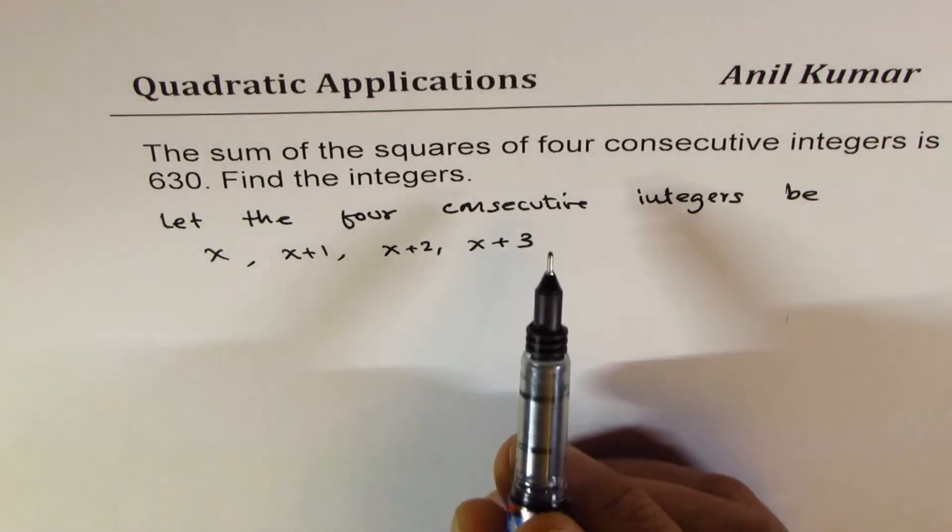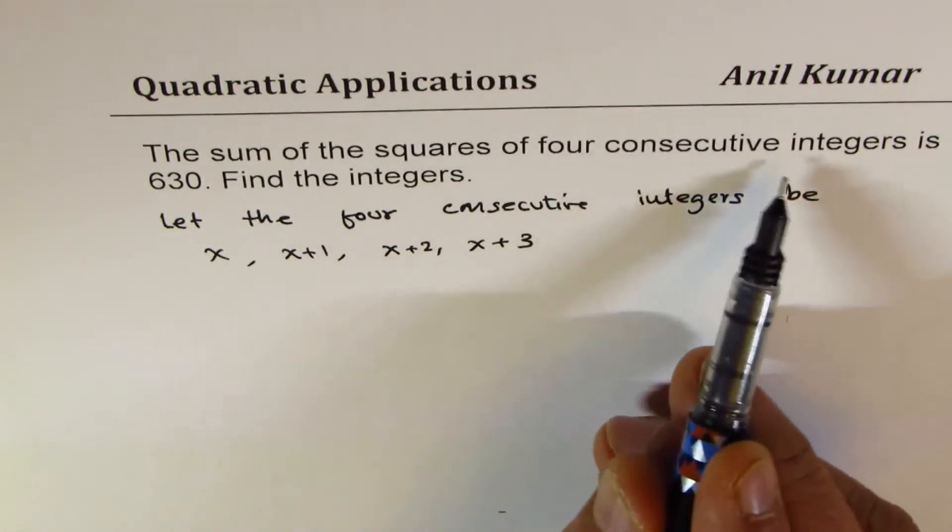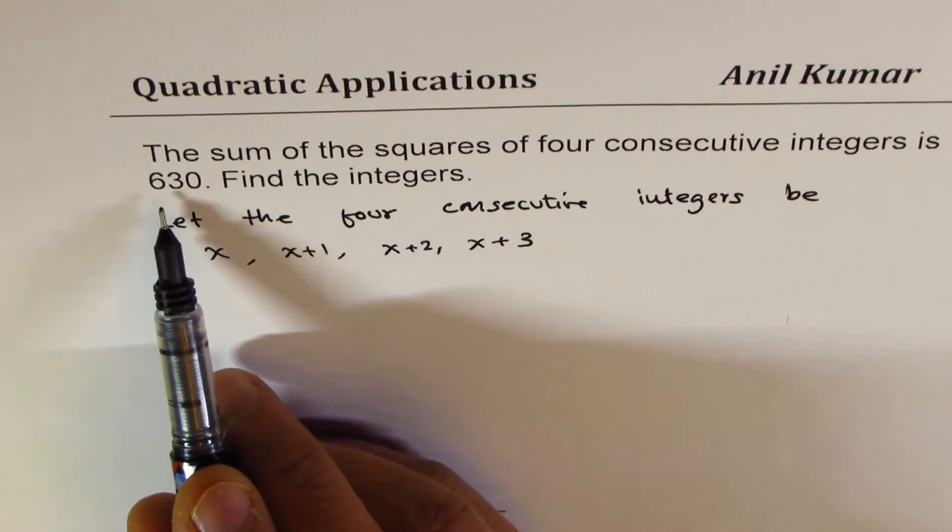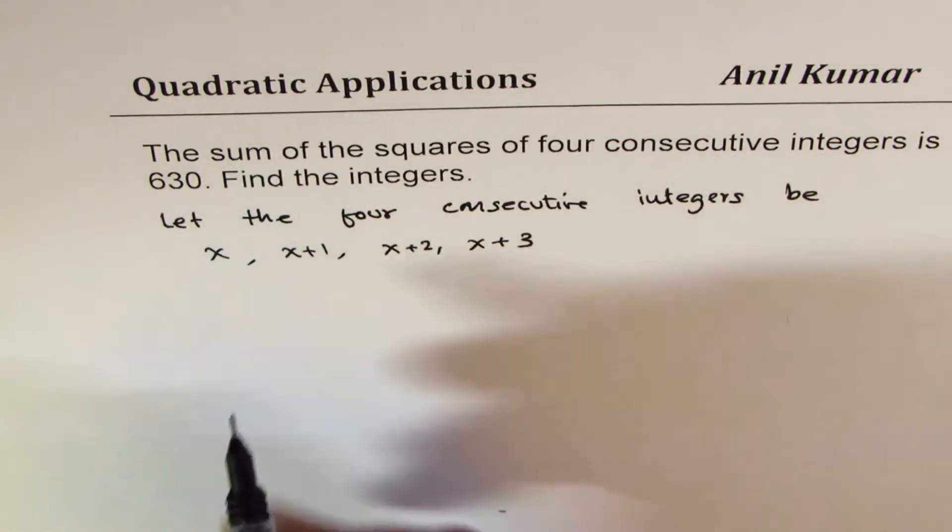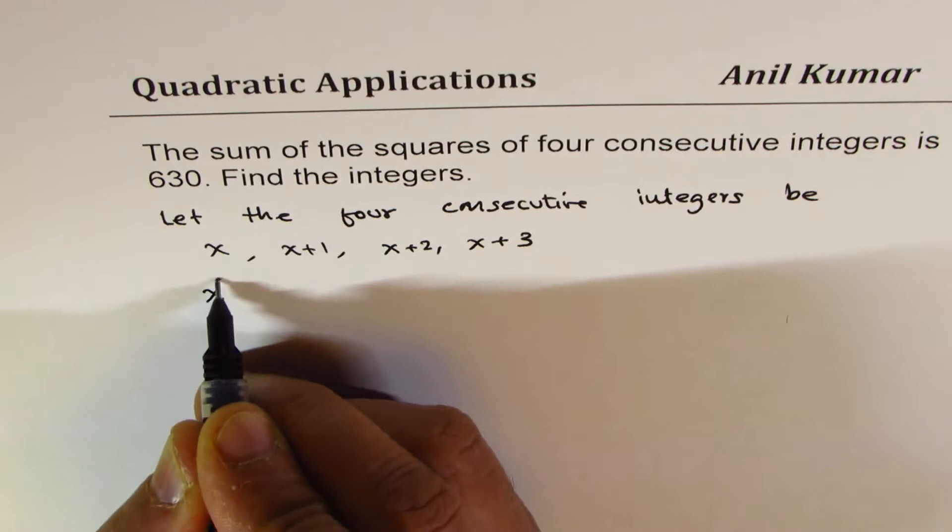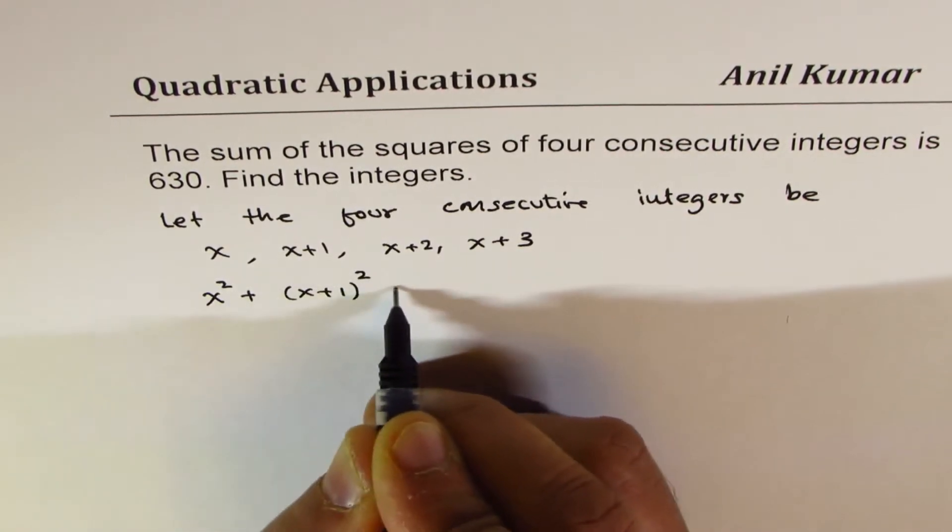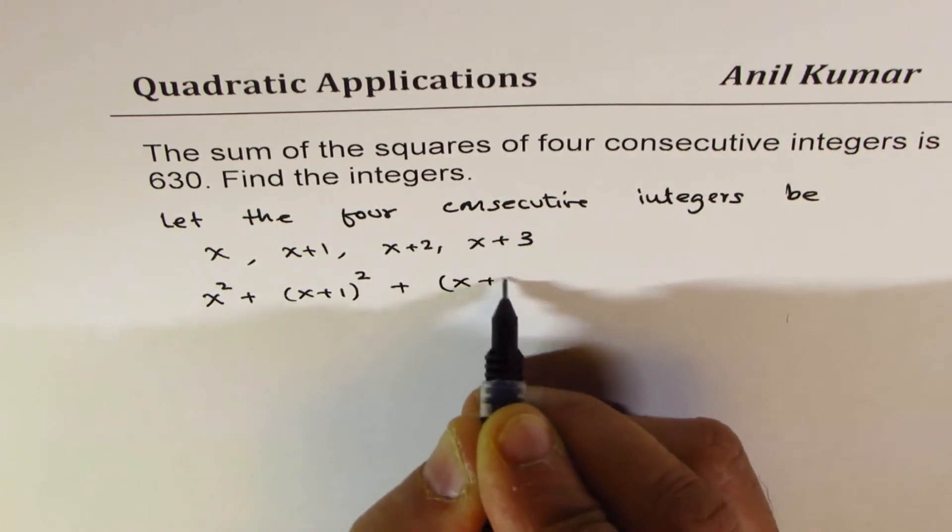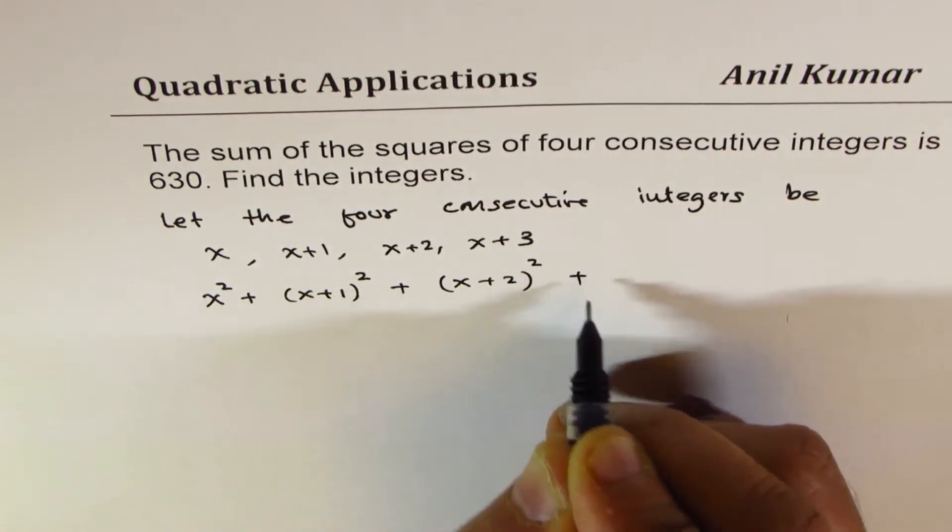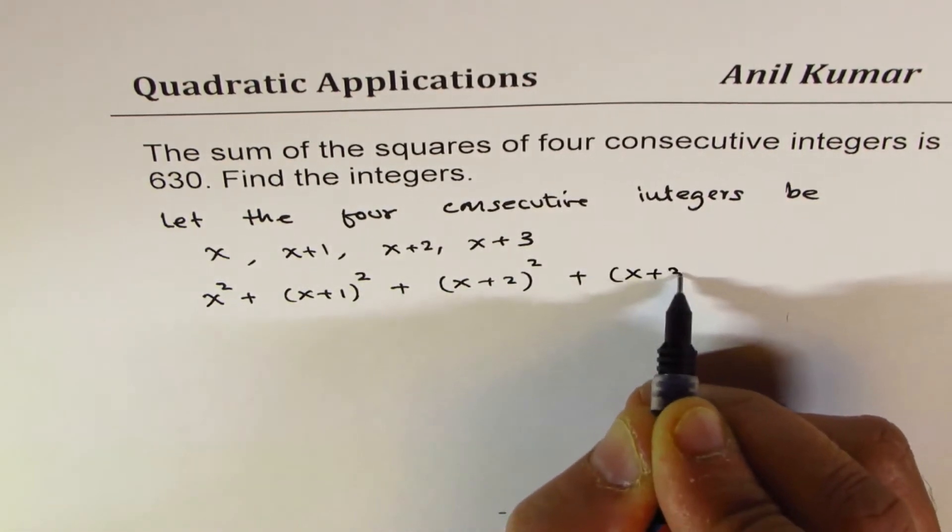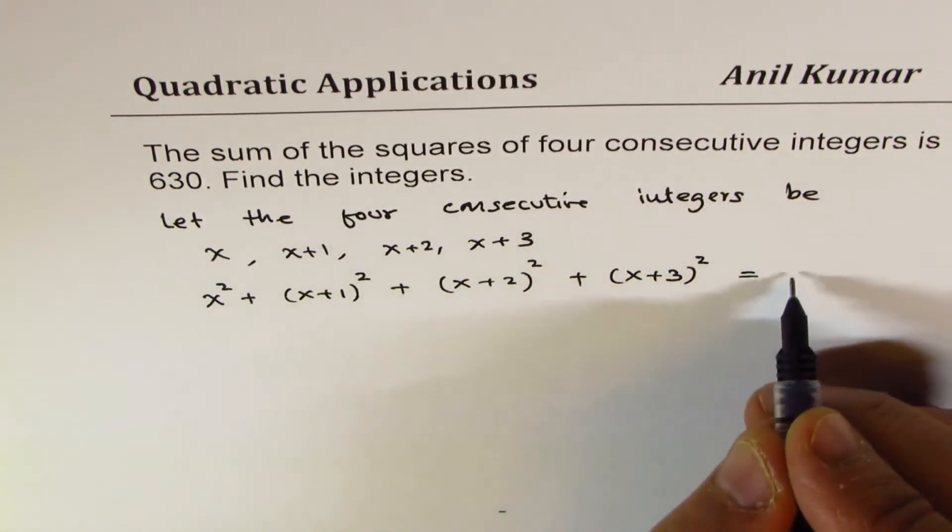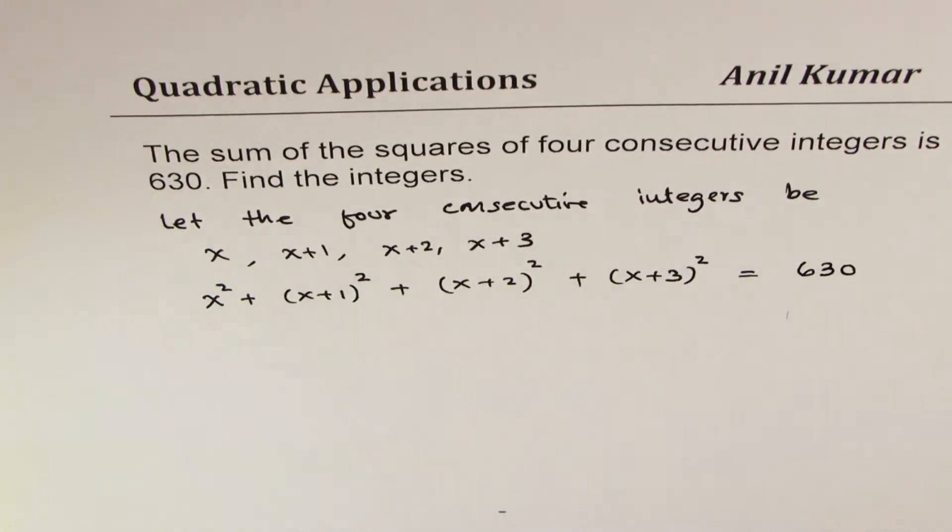So what are we given? Squares of four consecutive integers is 630 when you add them. So sum of squares. So let's say x square plus x plus 1 whole square plus x plus 2 whole square plus x plus 3 whole square is 630. That is what is given to us.